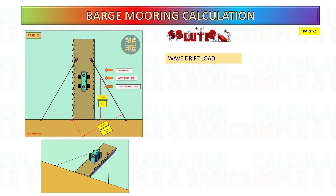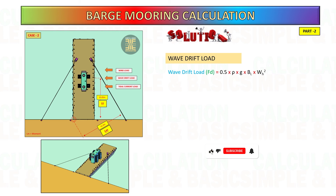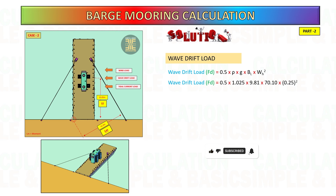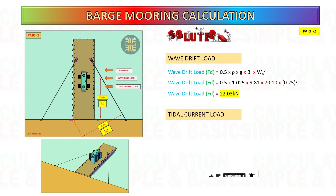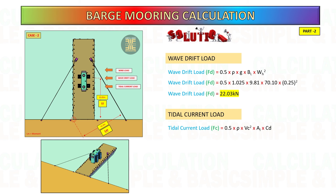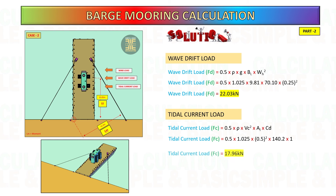Calculate the wave drift load by multiplying 0.5 times the density of sea water, gravity, the length of the barge, and half of the significant wave height squared. Then calculate the tidal current load.